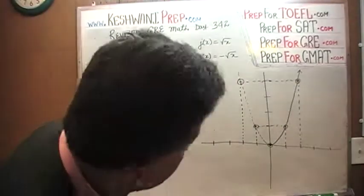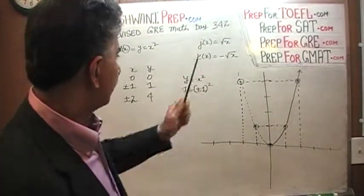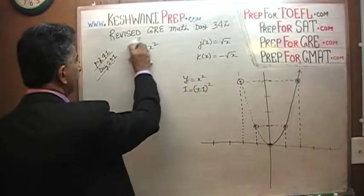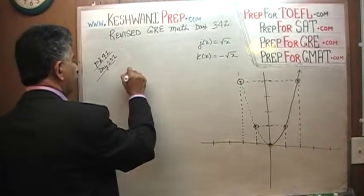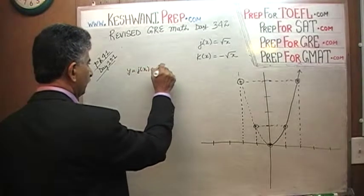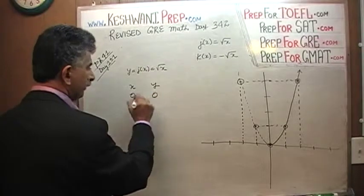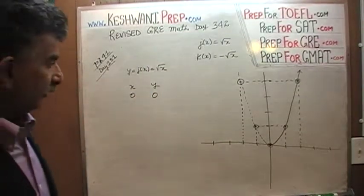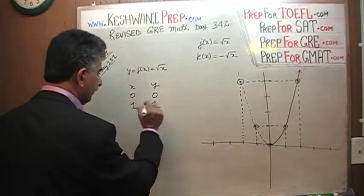Now we are going to plot the next one, which is j of x, the square root of x. y is equal to j of x, which is equal to the square root of x. When x is 0, y is going to be 0, because the square root of 0 is 0. When x is 1, y is going to be 1. When x is 4, y is the square root of 4.